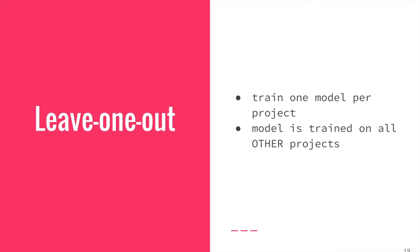We used the leave-one-out methodology to train models. We trained n models where n is the number of projects. For every project, we plucked that project out of the corpus and trained the model on the remaining projects. This way, each model has no prior knowledge of the project of interest. Then we asked the model to rate the unusualness of each commit message through the analog of cross-entropy.